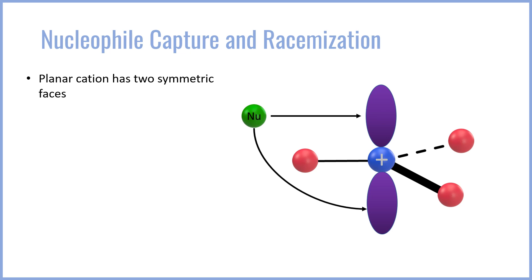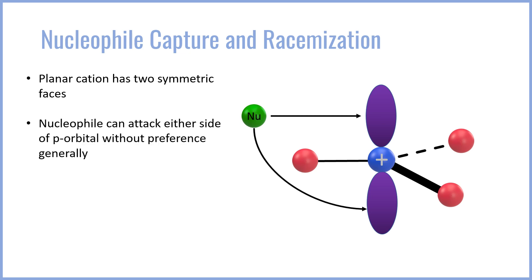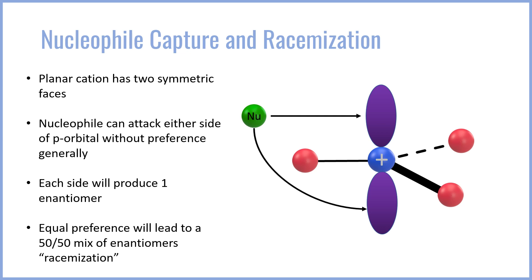When the nucleophile approaches, it has the choice to attack from both sides — the top or the bottom face. The nucleophile can attack either face without preference, and so each side where the nucleophile attacks, because it will attack both equally, will create a distinct enantiomer. The equal preference for both faces will lead to a 50-50 mix of enantiomers in the final product. This is known as a racemic mixture.